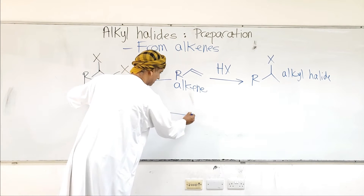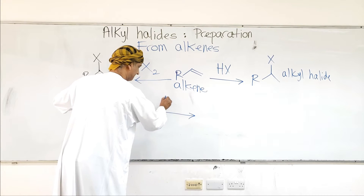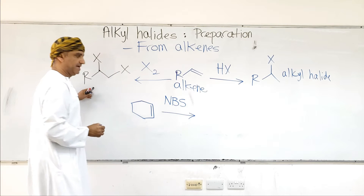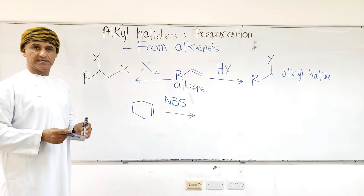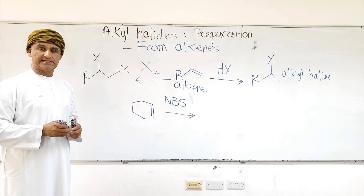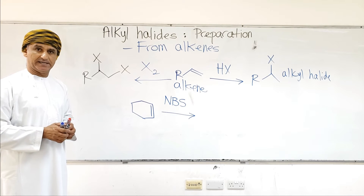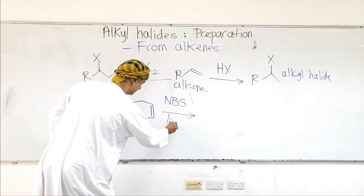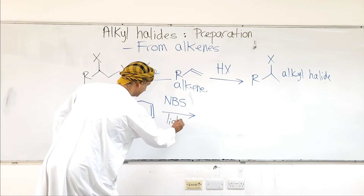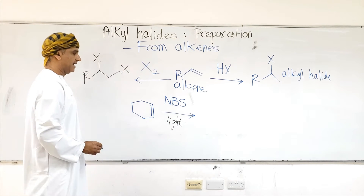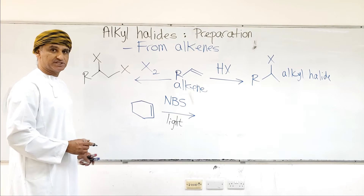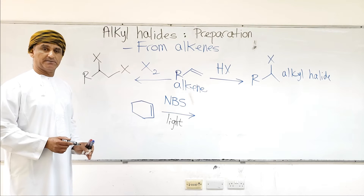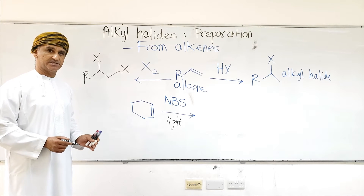We react cyclohexene with NBS — which is N-bromosuccinimide, a bromine source — in the presence of light. The reaction that takes place is different from the previous electrophilic addition reactions of alkenes.